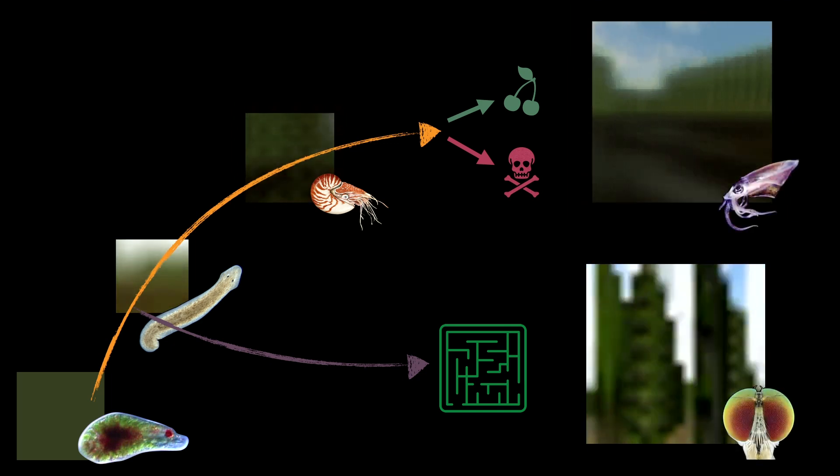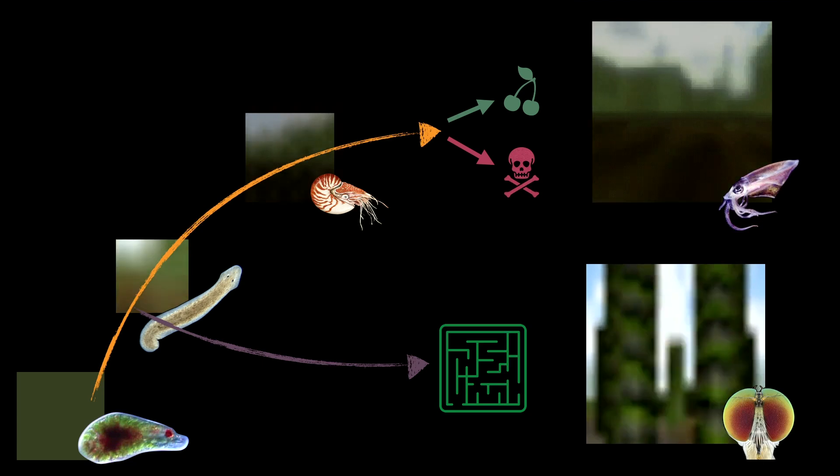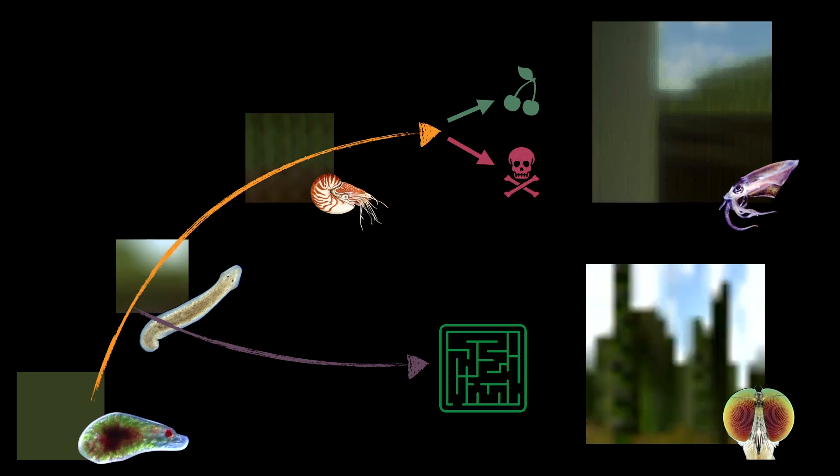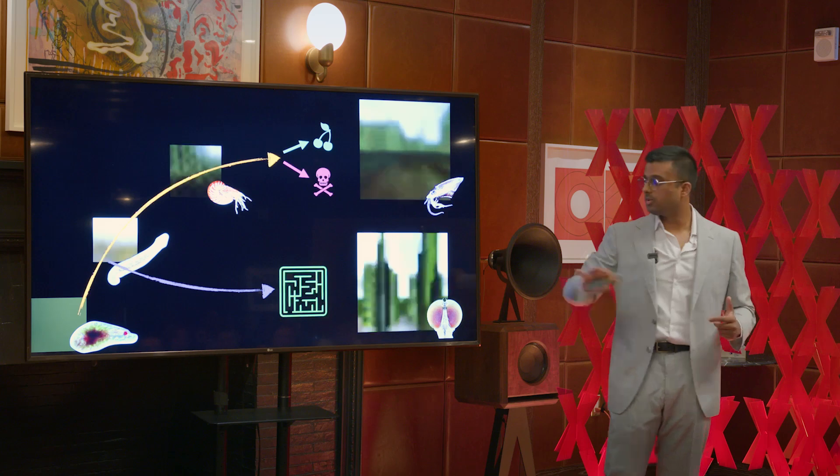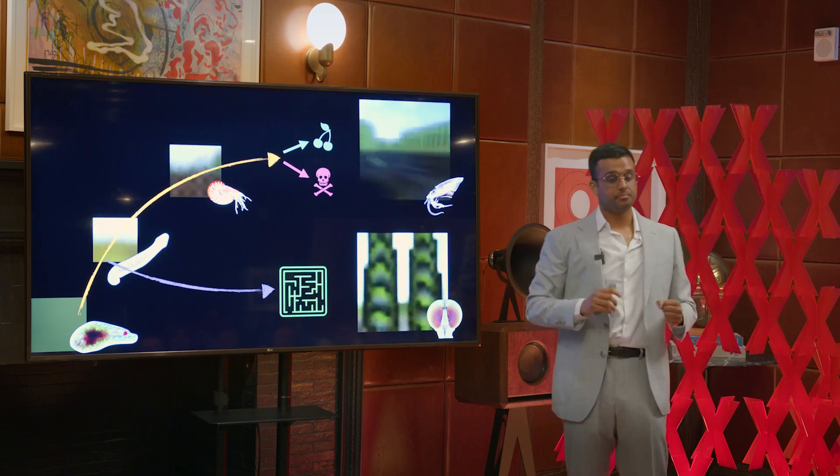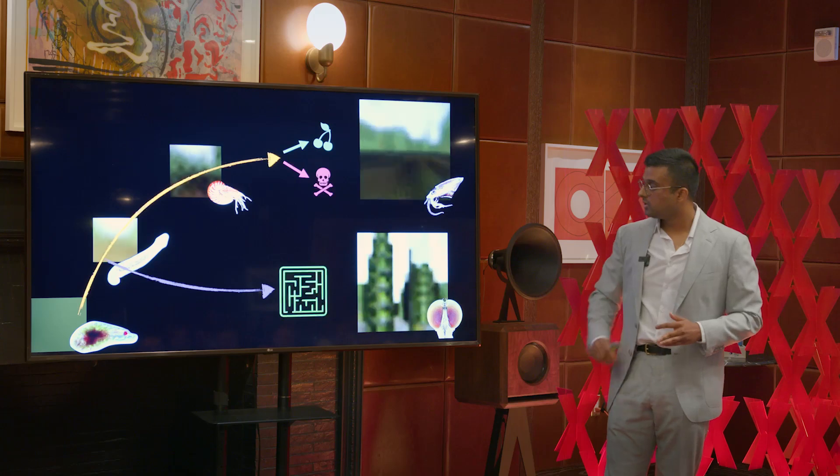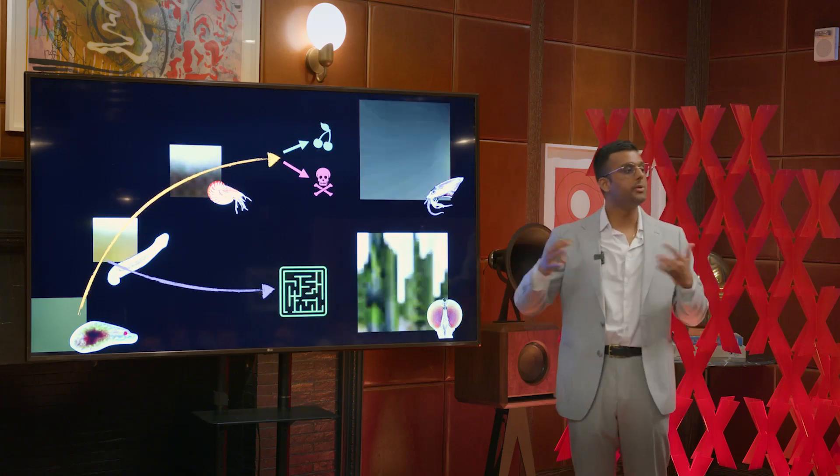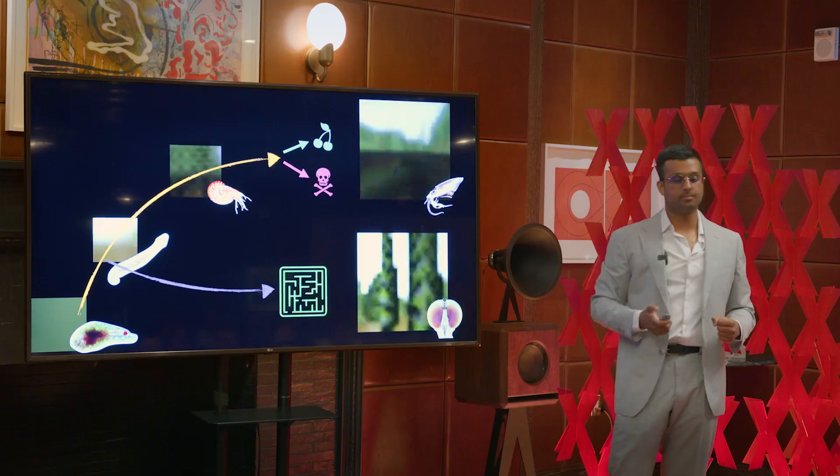So we ran this experiment and we saw that this is the case. When we evolve for tasks which require detection of fruit versus poison, we get eyes that look like human eyes. But when we evolve for a different task, we start to get eyes that might look like eyes of an insect, compound eyes. We see very different ways of viewing the world as a function of what the behavior is.